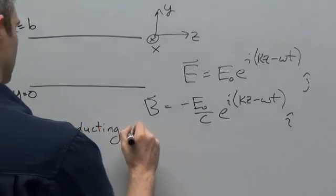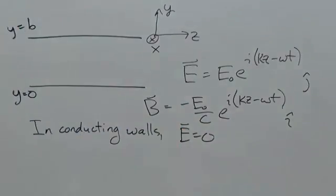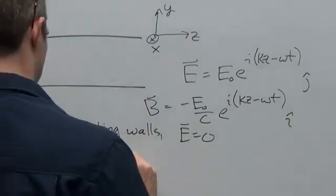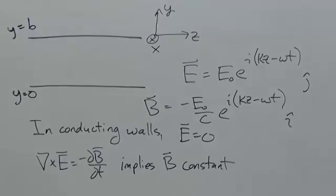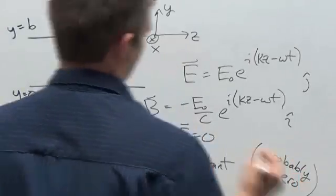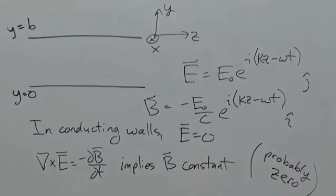We know that in the conducting walls E equals zero, and del cross E equals minus dB/dt implies that if E in there is zero, B can be at most constant. I guess it's possible that there's some uniform background B in the problem, but typically that constant will be zero.